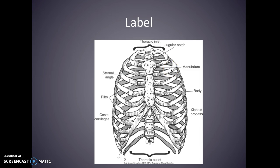You're going to have to be able to label just the basic anatomy. You have your thoracic inlet up top and your thoracic outlet down at the bottom, your jugular notch, manubrium, the body of your sternum with your xiphoid process that hangs off the tip, your sternal angle, your ribs, and your costal cartilages attaching your ribs to your sternum.